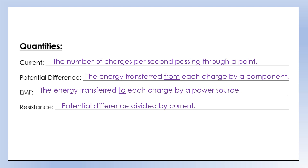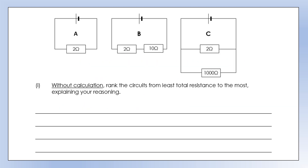Let's explore some of the rules that circuits follow. Without doing a calculation, rank the circuits from least total resistance to most, explaining your reasoning. The actual order is: lowest resistance is circuit C, then circuit A, then circuit B. The key reference point is the 2 ohm resistor present in all of them, with slight tweaks around it.